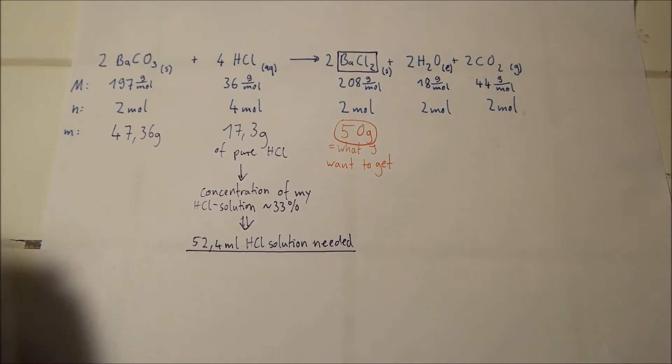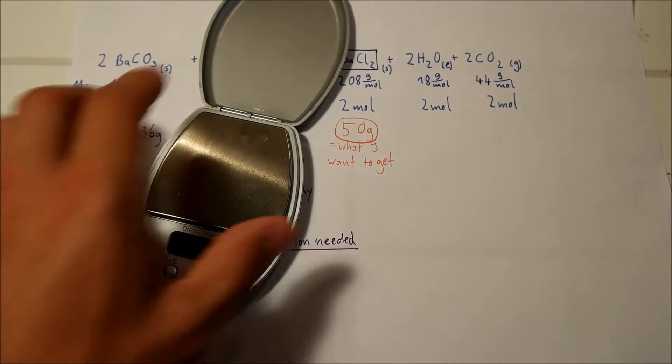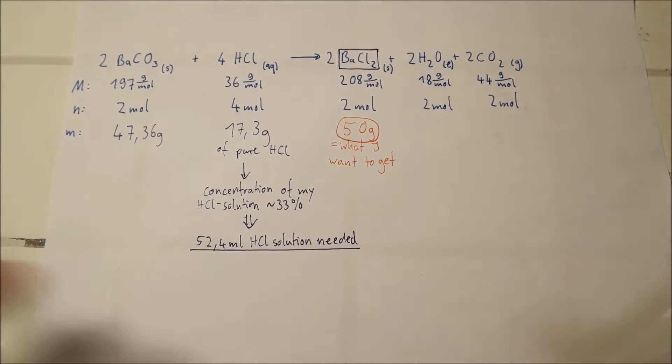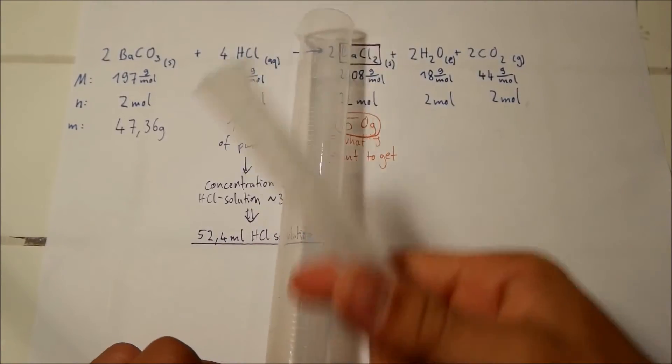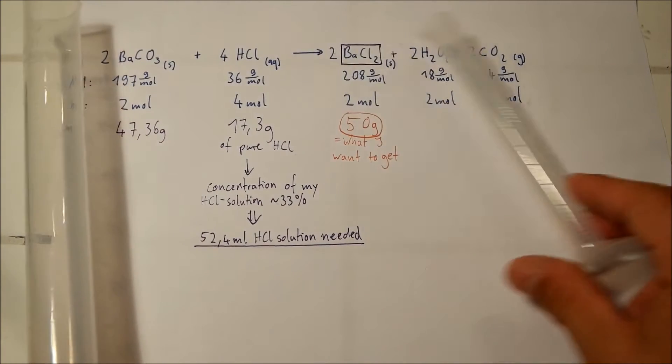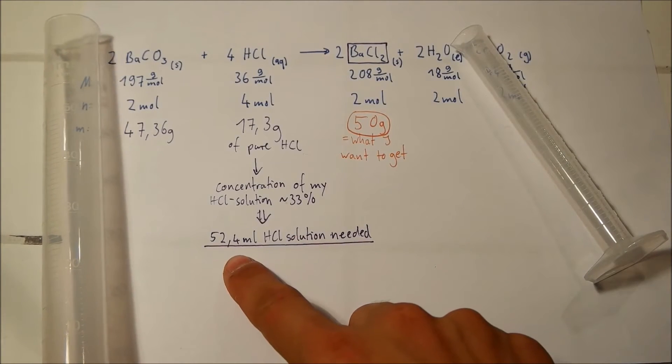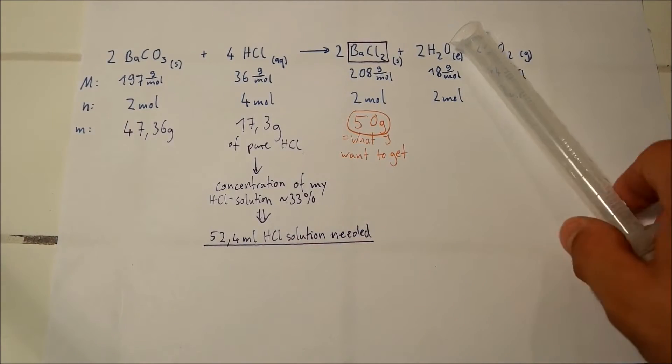To get the right amount of my chemicals, I used those cheap scales and graduated measuring cylinders. This one has 50 milliliters and this one 10 to get my 52.4 milliliters of HCl solution.